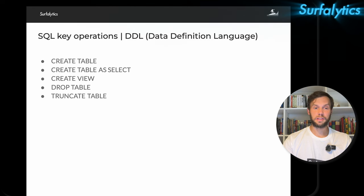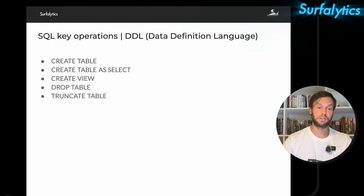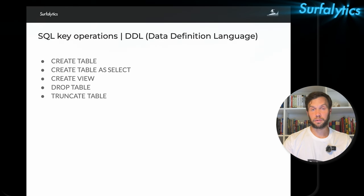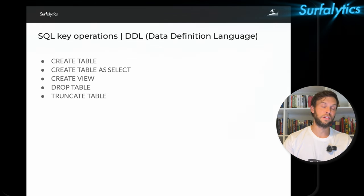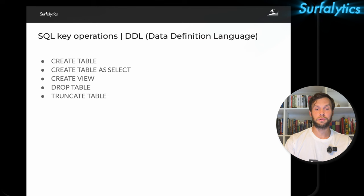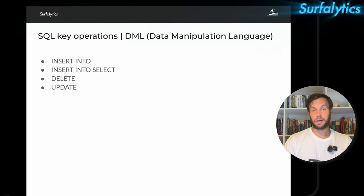What are the key SQL operations? First, DDL — Data Definition Language — which has commands to create tables, create views, drop tables, and truncate tables. Truncate basically erases everything from the table. When working with big data as a data engineer or analyst, if you have some SQL logic and want to create another table on top of it, you can use CREATE TABLE AS SELECT, also known as CTAS.